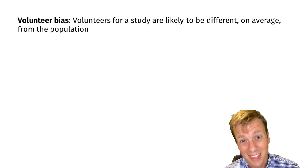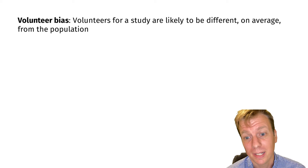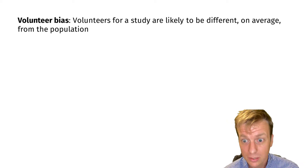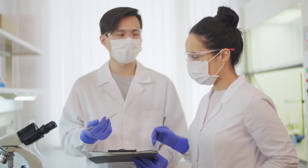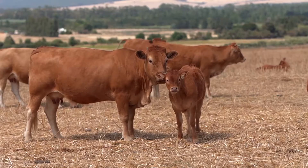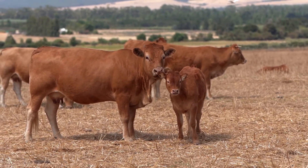When you're working with living things, which many biologists do, you can also have what is called volunteer bias. Volunteers for a study are likely to be different, on average, from the population. For example, volunteers for medical studies may be sicker than the general population. If you are studying animals, those that are caught may be slower or more docile than those that are not. This bias can really mess up your estimates, so you need to be very careful about the types of organisms you sample.